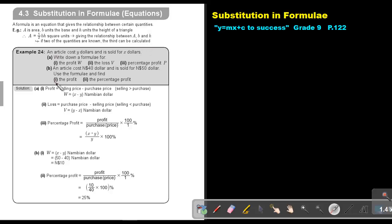Let's look at an example. An article costs Y dollars and is sold for X dollars. Write down a formula for the profit V. For the profit, the selling price will be bigger than the purchase or cost price, so it's the selling price minus the purchase price: X minus Y Namibian dollars. For the loss, the selling price will be smaller than the purchase price, so it's Y minus X Namibian dollars.